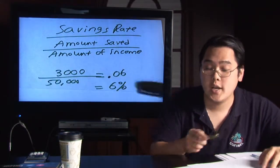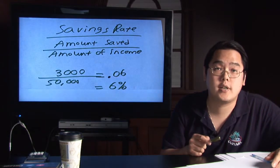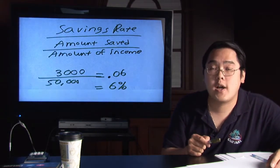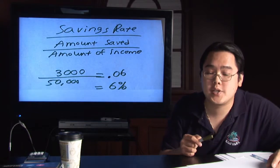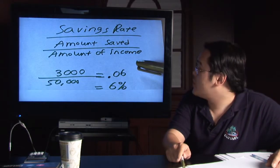To figure out your savings rate, you take your $3,000, use a calculator if you like, and divide that by $50,000. Round to two decimal places and you will get 0.06.